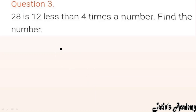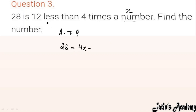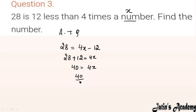Question 3: 28 is 12 less than 4 times the number. Let the number be x. So 4 times the number minus 12 equals 28, meaning 4x minus 12 equals 28. Moving minus 12 to the other side: 4x equals 28 plus 12 equals 40. Dividing by 4, x equals 10. So the number is 10.